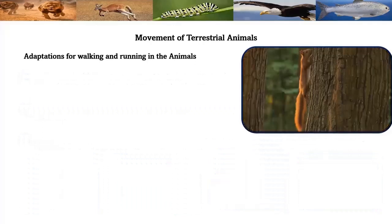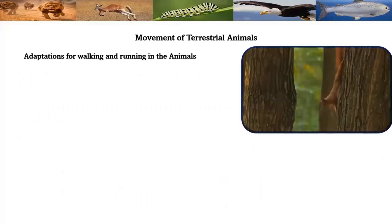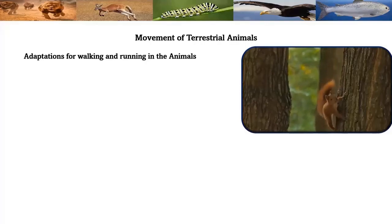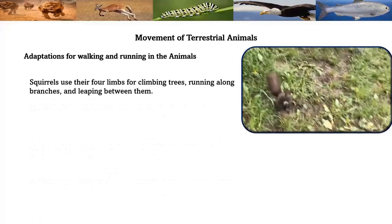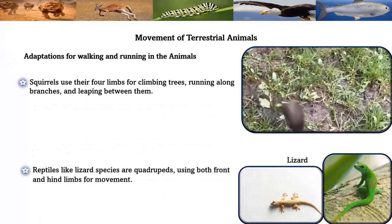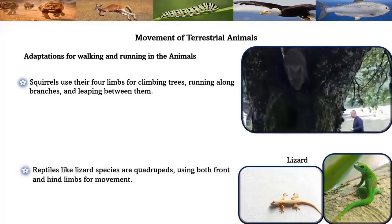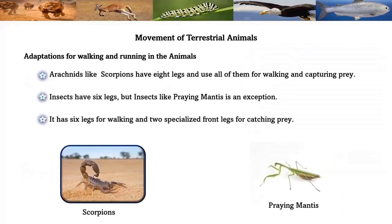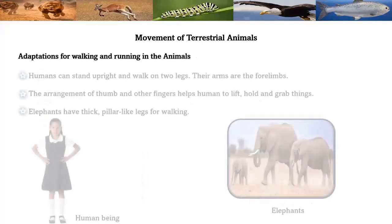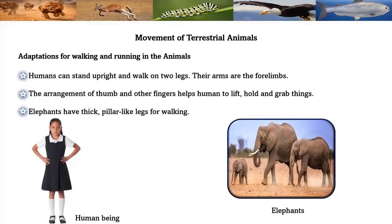Squirrels use four limbs for climbing trees, running along branches, and leaping between them. Reptiles like lizards are quadrupeds, using both front and hind limbs for movement. Arachnids like scorpions have eight legs and use all of them for walking and capturing prey. Insects have six legs, but the praying mantis is an exception — it has six legs for walking and two specialized front legs for catching prey. Humans can stand upright and walk on two legs.